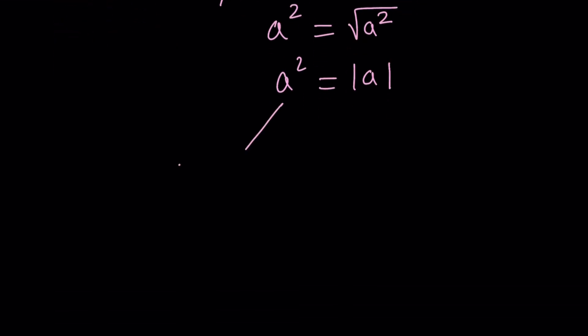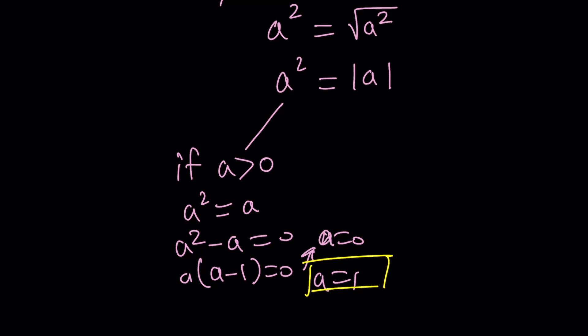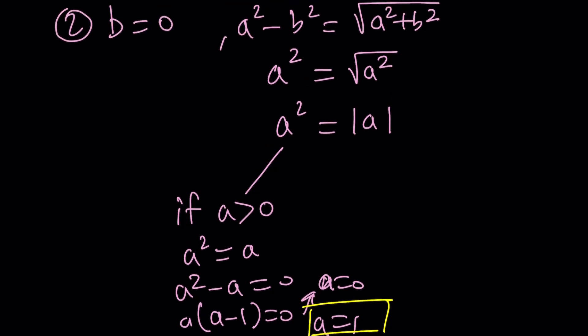If a is positive, then absolute value of a is going to be positive a. So a squared equals a is the solution. If you take out the a as a factor, you get two solutions. Either a is zero or a is one. We said that if a is positive, so a equals one is definitely going to work. But what about a equals zero? Yes, that's going to work too, because notice that zero satisfies this. So that gives us b equals zero, a equals zero, but we already have that. So we don't have to repeat ourselves.